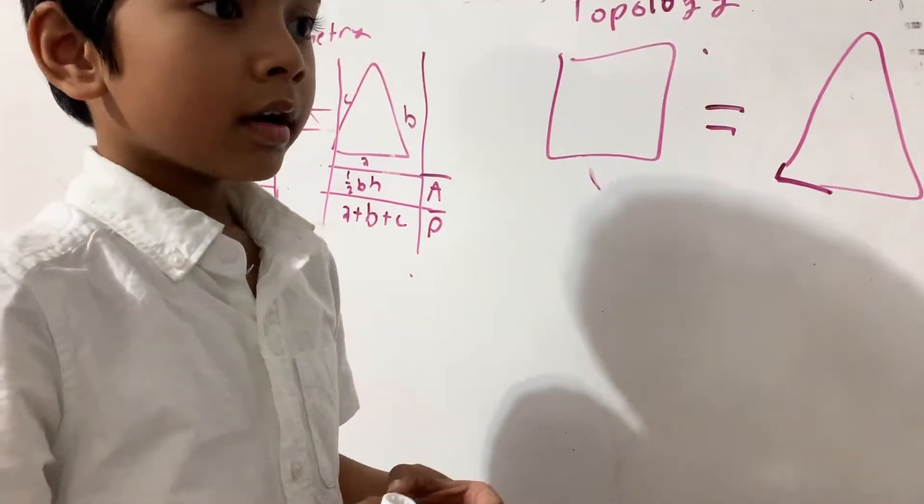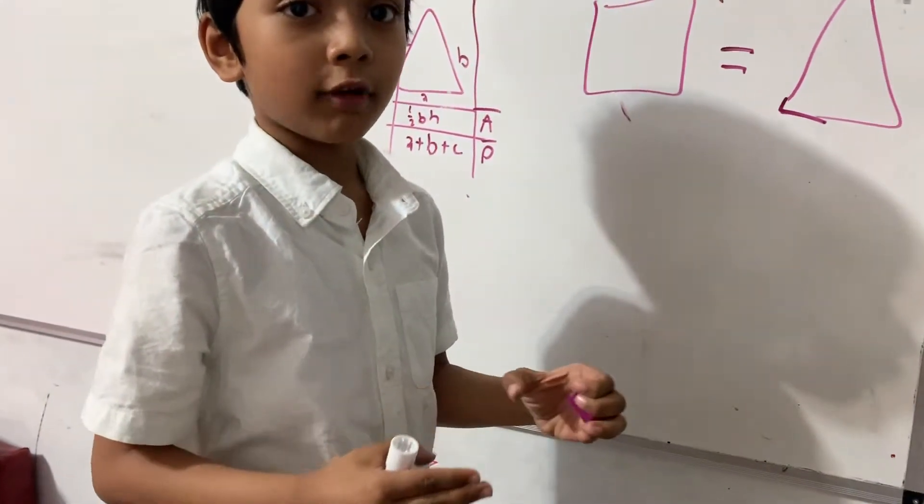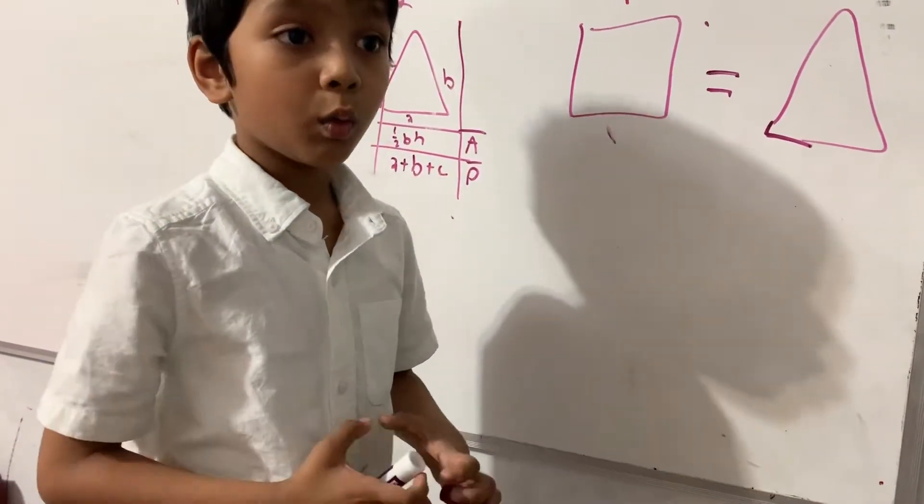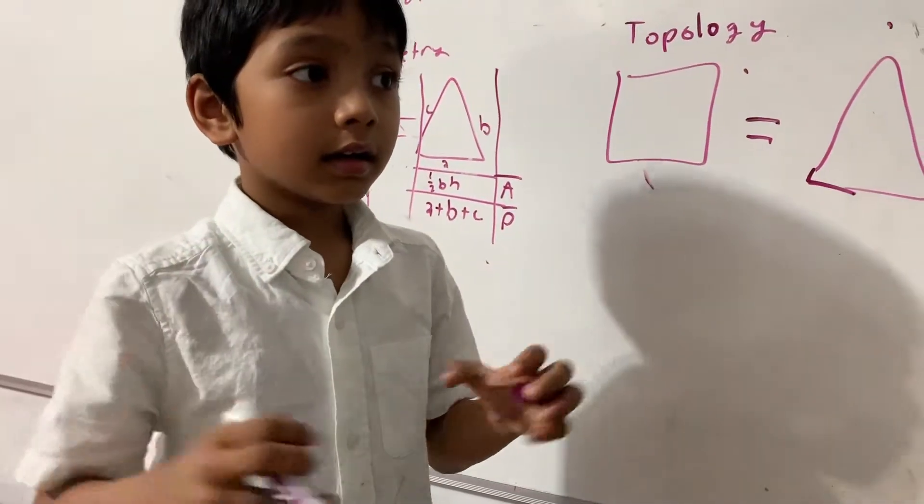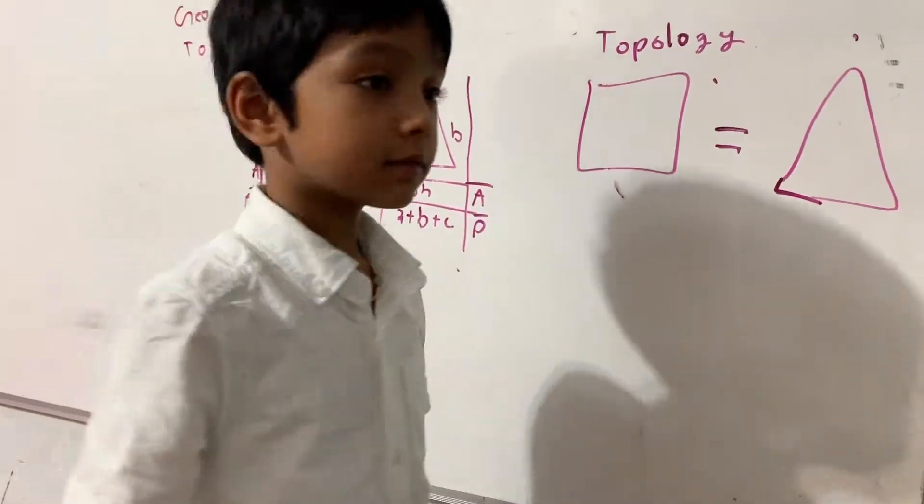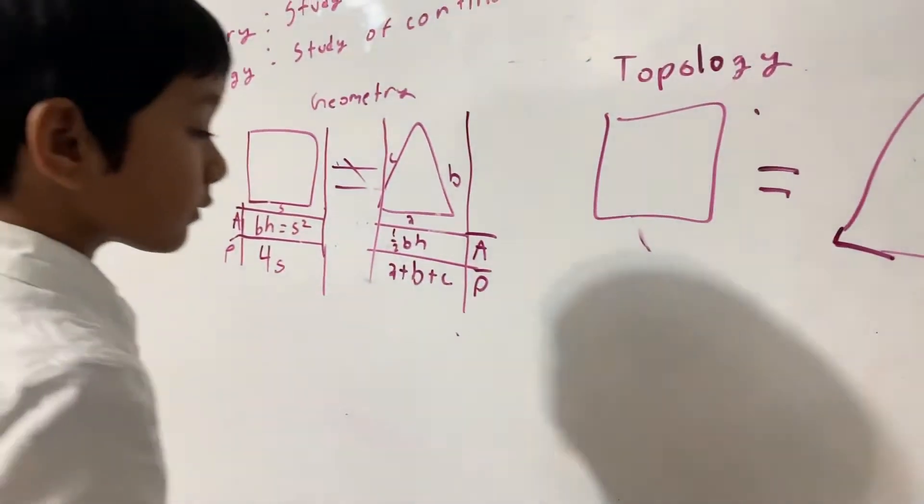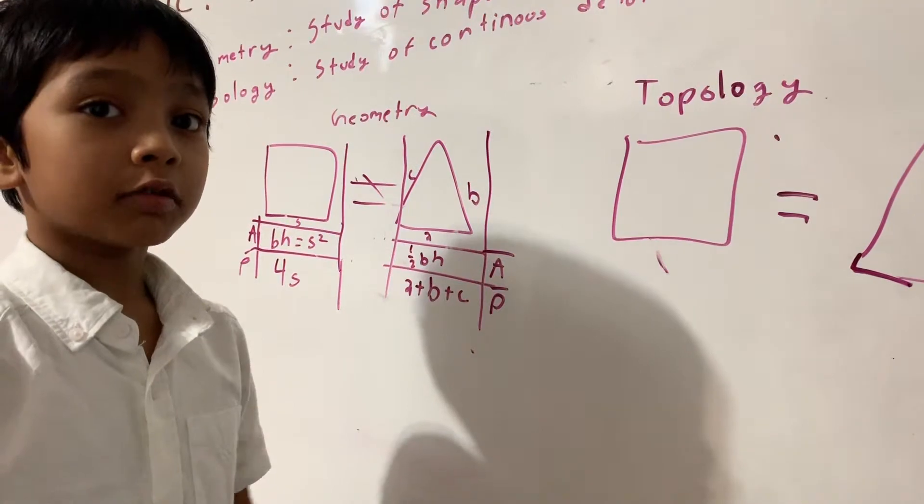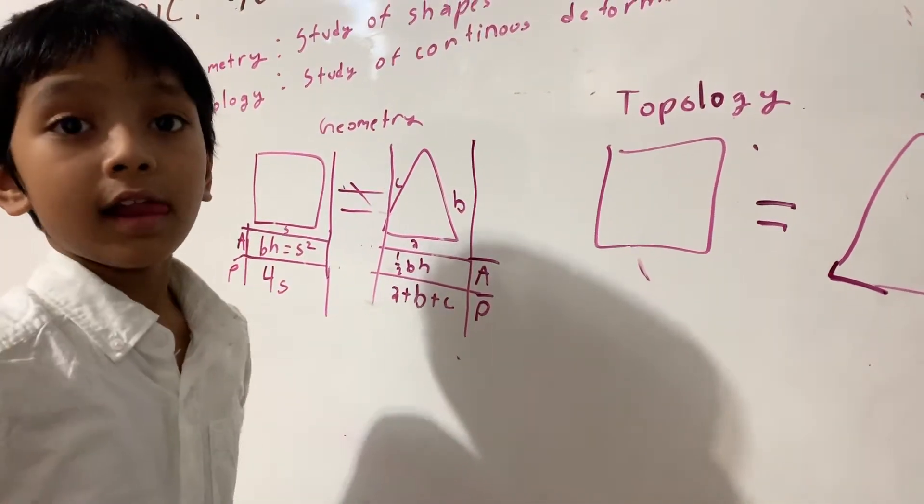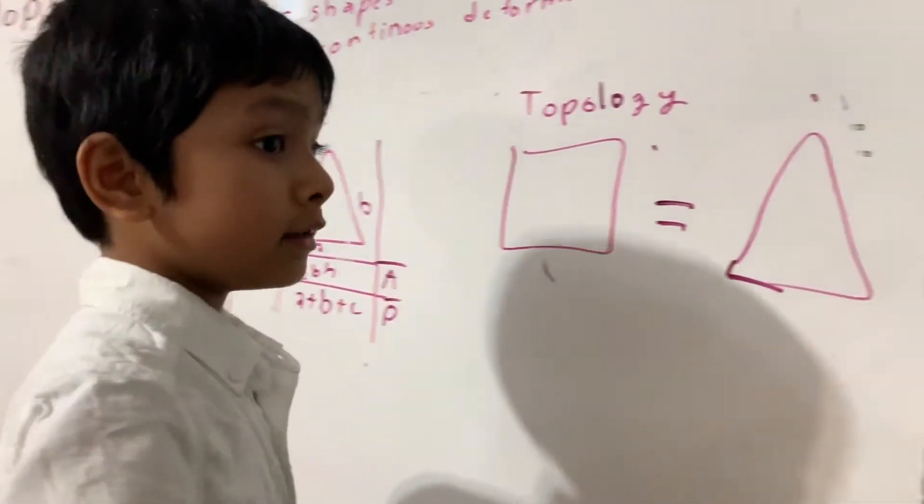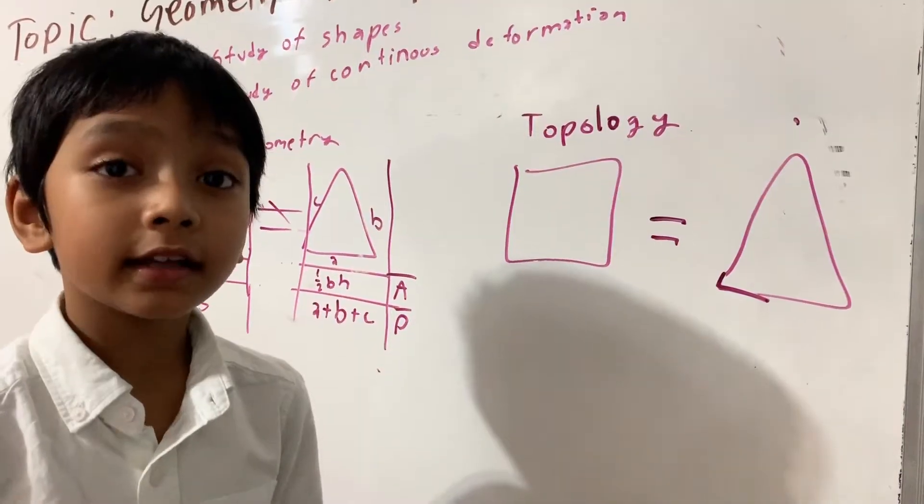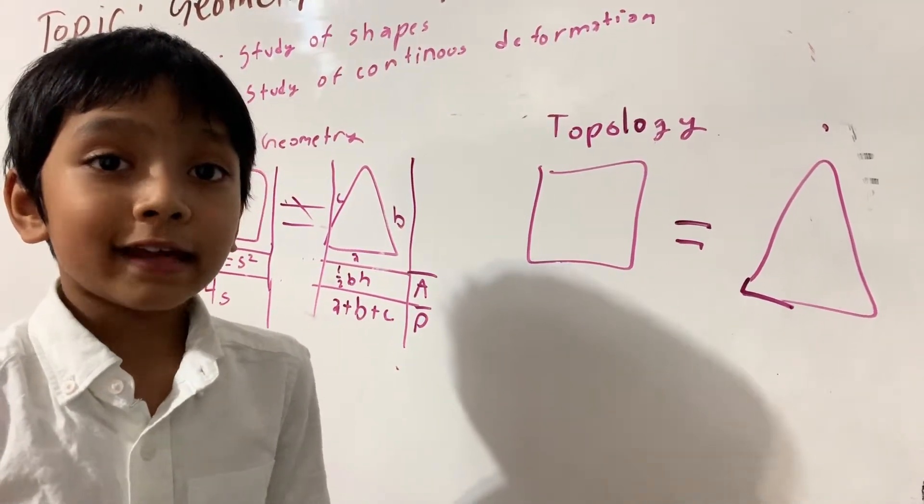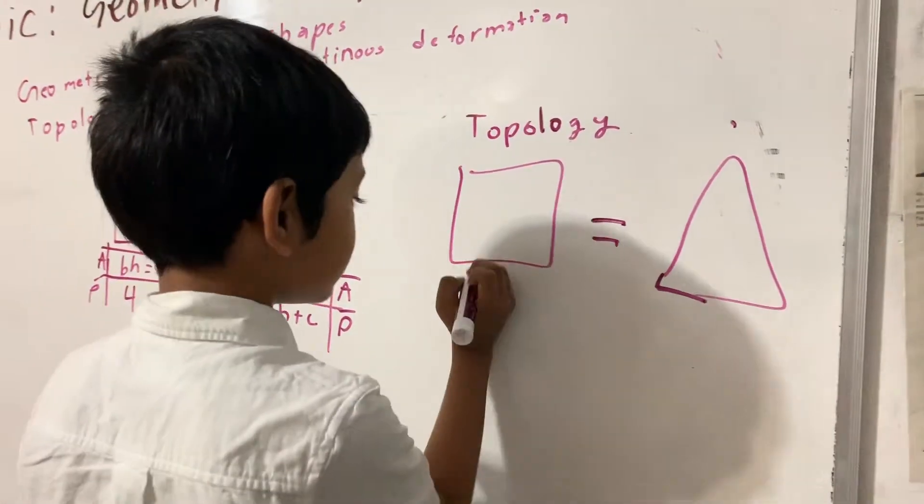You can either stretch it or compress it. Just like I told you, you can make a donut into a coffee mug. That's called continuous deformation because of their Euler characteristics.